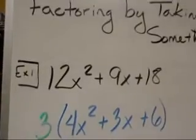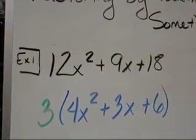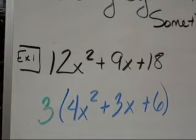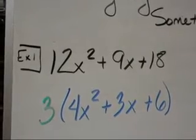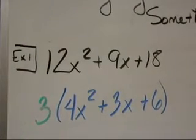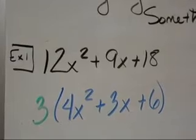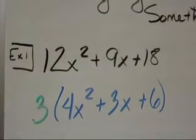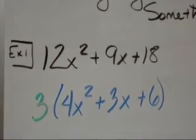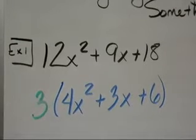So now it's just a process of asking myself. 3 multiplied by what is 12x squared? 4x squared. 3 multiplied by what is 9x? Positive 3x. And 3 multiplied by what gives me positive 18? Positive 6.